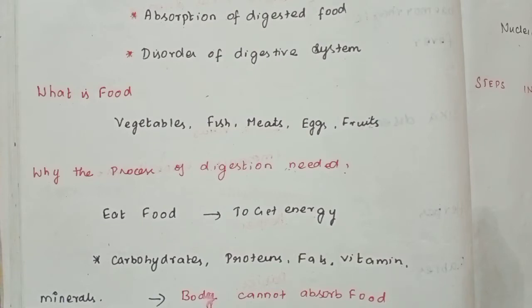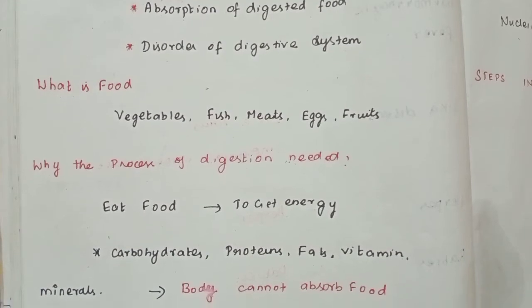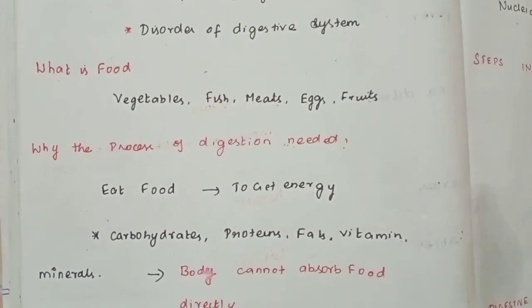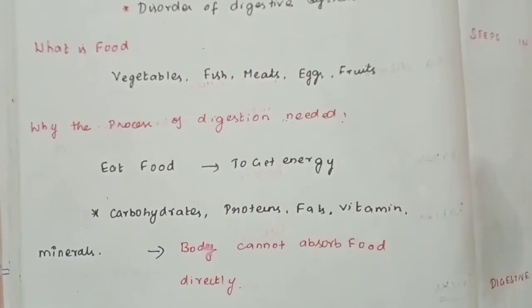In the food, there are carbohydrates, proteins, fats, vitamins, and minerals. The body cannot absorb these directly in their complex form.